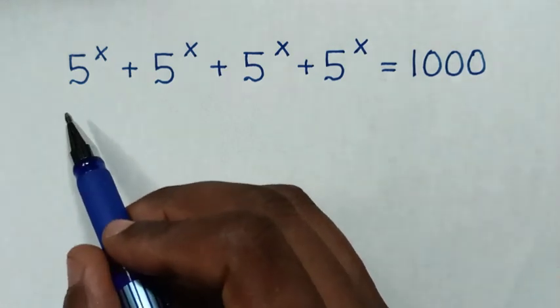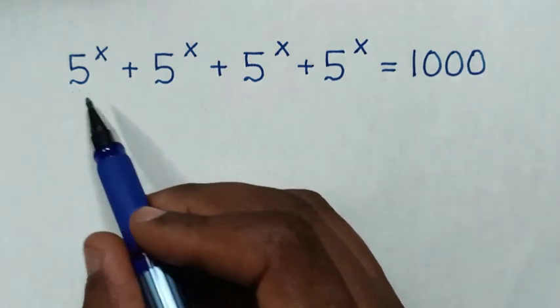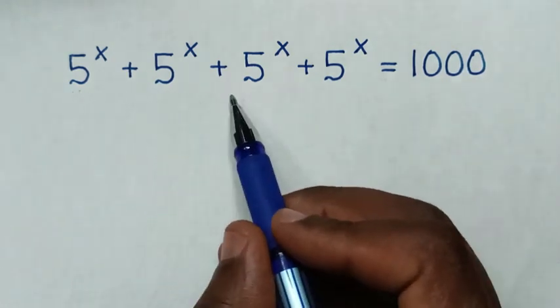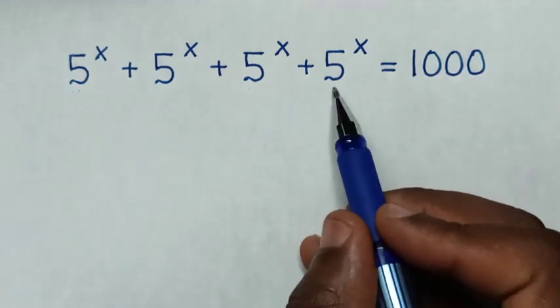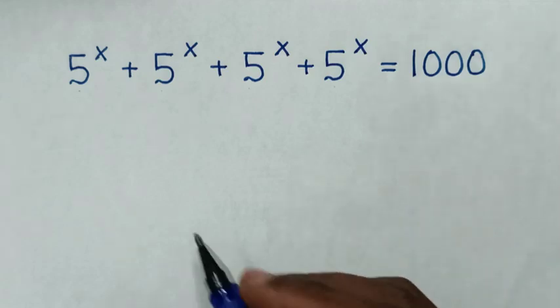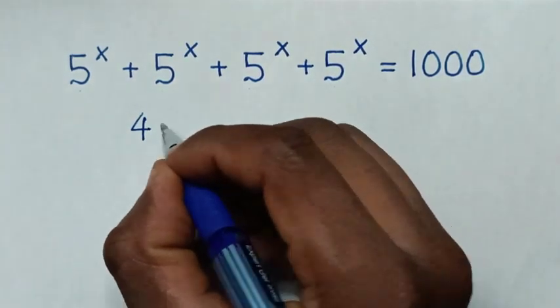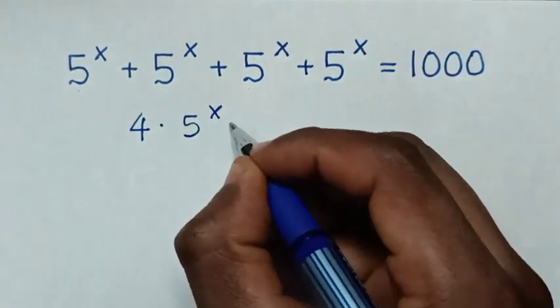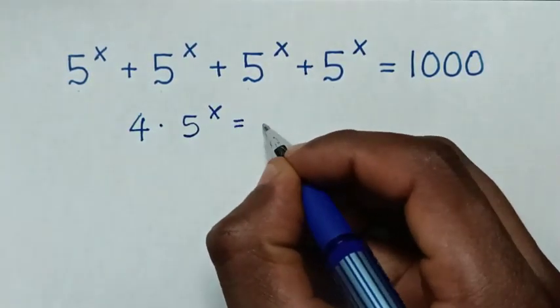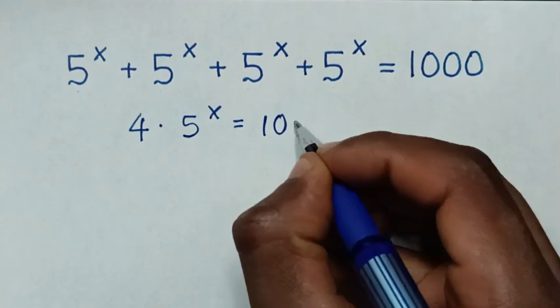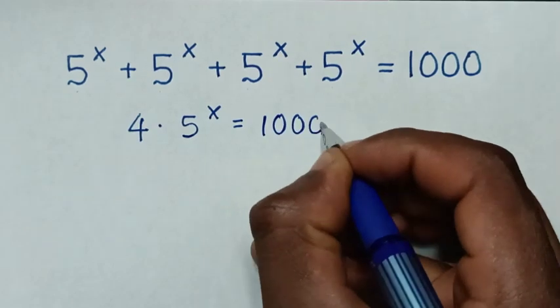From here we have 5 power x — 1, 2, 3, 4 — then it will be 4 times 5 power x is equal to 1000.